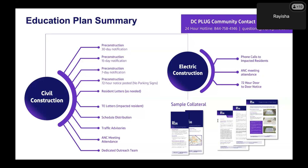Once we begin the education plan around the pre-construction phase, we do a 30-day notification, a 15-day notification, and a 7-day notification door-to-door to all impacted residents — you'll receive a door hanger at least three times. We also host a pre-construction meeting, inviting everyone who attended tonight as well as conducting door-to-door outreach with that information. Resident letters are sent as needed — for example, if a sidewalk will be closed — and those who received transformer enclosure packets during design will receive letters again during construction.